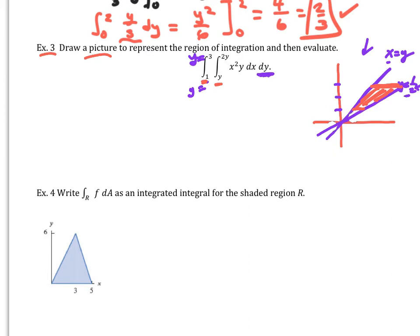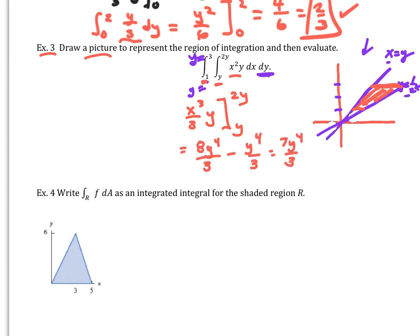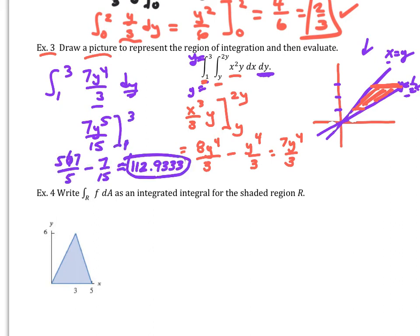Taking the antiderivative with respect to x gives x³/(3y), evaluated from x = y to x = 2y. Plugging in both limits gives 7y⁴/3. Then integrating from y = 1 to y = 3: the antiderivative is 7y⁵/15, evaluated from 1 to 3, which gives approximately 112.9333.